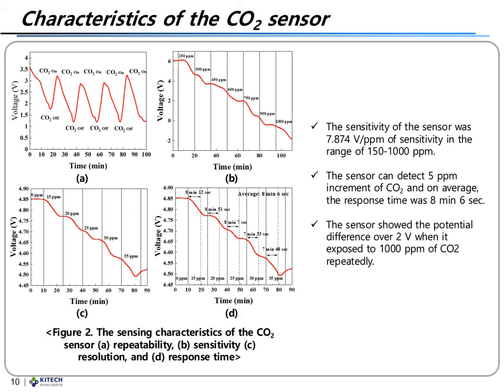The sensor's performance as a carbon dioxide sensor was evaluated using our gas chamber system. As you can see in Figure 2A, the sensor showed an electrical signal change in the presence of 1000 ppm of carbon dioxide. Figure 1B represents the sensitivity of the sensor, which was 7.874 millivolts per ppm in the range of 150 to 1000 ppm. In Figures 1C and 1D, the sensor can detect 5 ppm increments of carbon dioxide, and on average the response time was 5 minutes 6 seconds.